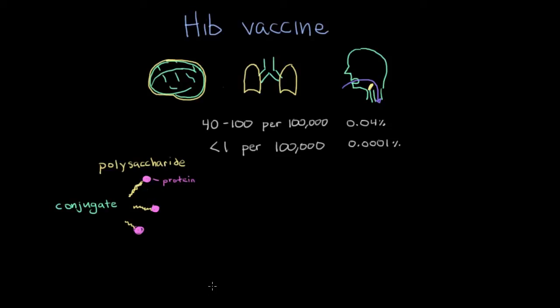Due to this conjugation, the Hib vaccine is more than 95% efficacious, meaning it's very effective against stopping the bacteria. But keep in mind this is all for only the type B strain. All the other types of Haemophilus influenzae can still afflict the patient, but it's really the type B strain that's the most severe.